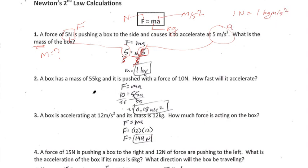Let's take a look at number 2. A box has a mass of 55 kilograms — I'm taking that mass and inserting it in for my mass. We know that it's being pushed with a force of 10 newtons, so I'm putting my 10 in for force. How fast is it going to accelerate? We don't know A, so leave it as A.